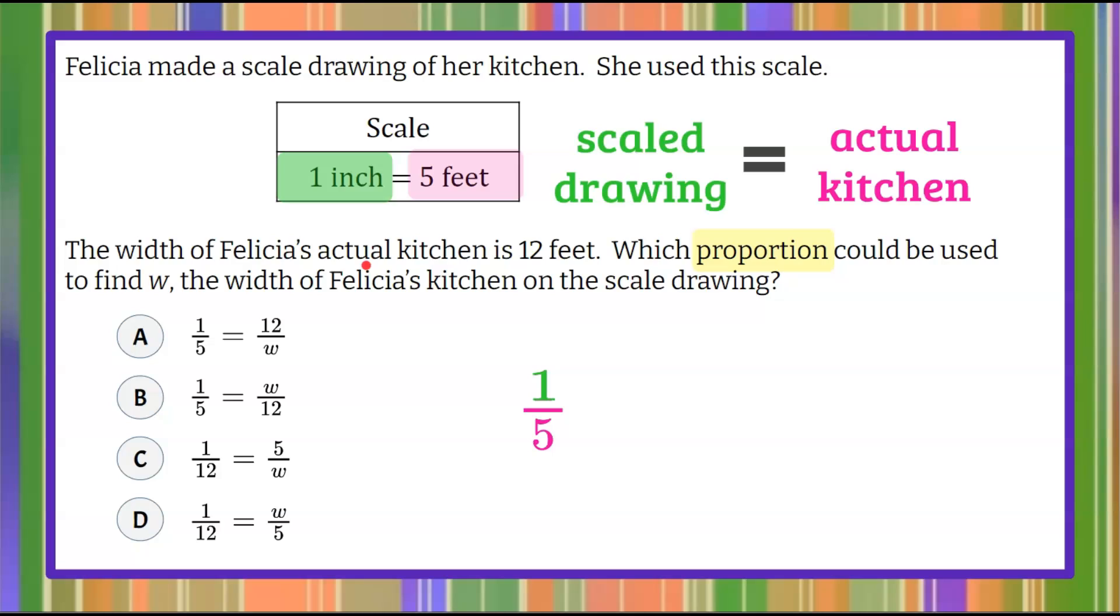Now let's go back to the information in the problem. We are going to write an equivalent ratio using that scale ratio. So we're told that the actual kitchen, that width of the actual kitchen, is 12 feet. So the actual kitchen is five feet scaled 12 feet.